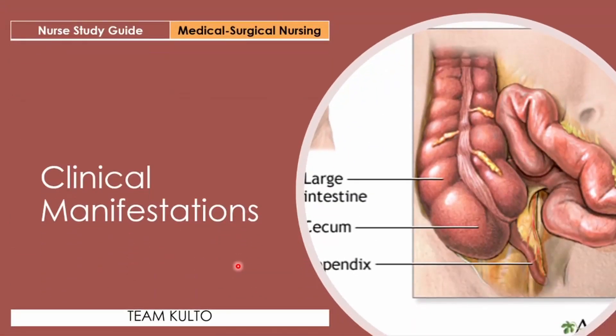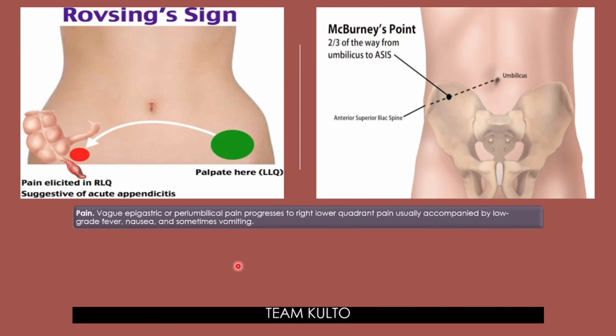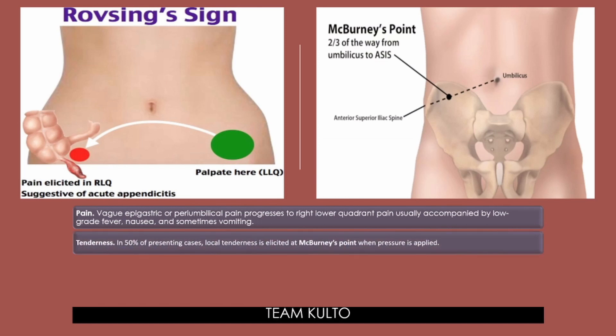Now, clinical manifestations. When I talk about pain, it's a vague epigastric or peri-umbilical pain that progresses to the right lower quadrant. Pain is usually accompanied by low-grade fever, nausea, and sometimes vomiting. Tenderness — in 50% of presenting cases, local tenderness is elicited at McBurney's point when pressure is applied. McBurney's point is located between your iliac spine and your umbilicus. When you apply pressure to this area, the patient will normally complain of pain.